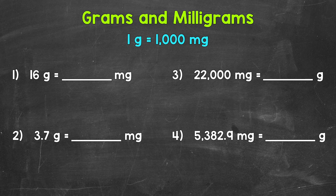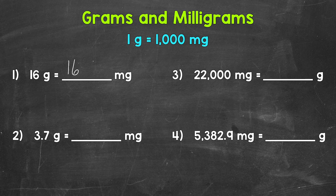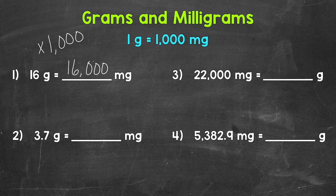Let's jump into number one, where we have sixteen grams equals how many milligrams? Well, each gram is one thousand milligrams, so we have one thousand milligrams sixteen times. In other words, sixteen times one thousand, which is sixteen thousand. So sixteen grams equals sixteen thousand milligrams. When we go from grams to milligrams, we multiply by one thousand.